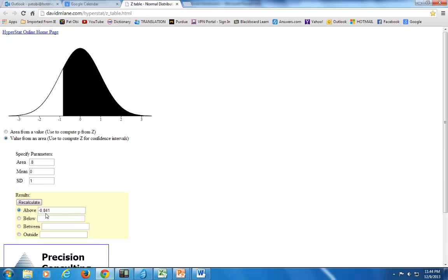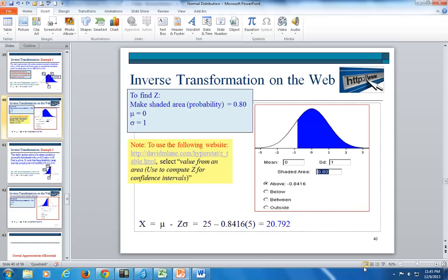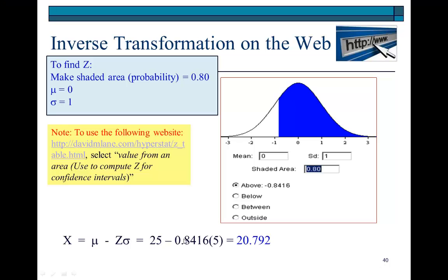And the computer knows to give it a negative sign already because it knows that this point right here is below the mean. Because remember, your mean is right here, the mean of zero for the standard normal variable. That's it. And then you'd plug it in here and, again, solve it out.